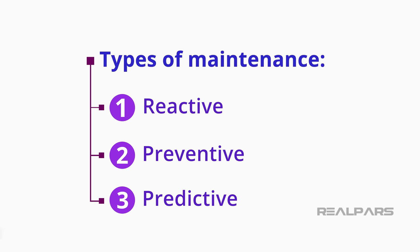Now, based on this simple chart, there are three main types of maintenance: reactive, preventive, and predictive.